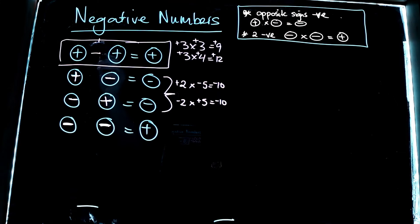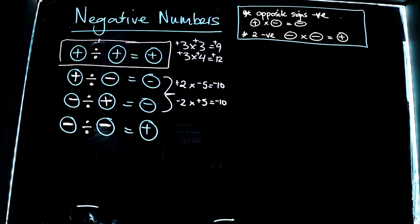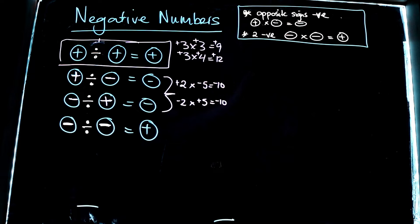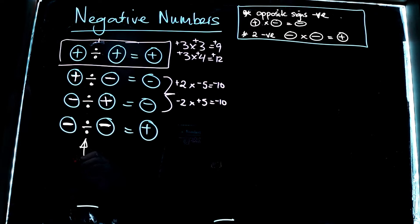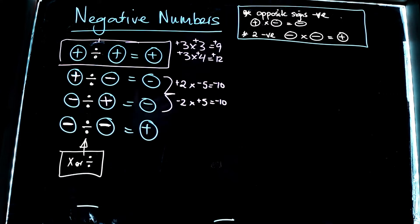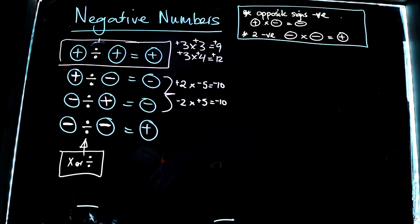I can replace the multiply sign with a division sign, because the same sort of thinking applies when we divide numbers — the same rules apply. Do we need to write it out a second time with a division sign, or do we just understand that multiplication and division are opposite operations doing the same sort of work? I reckon the best thing to do now is actually do some numbers and check out how this works.